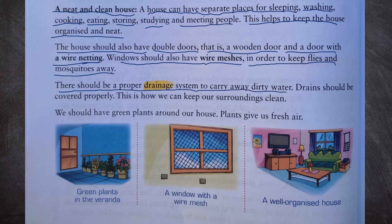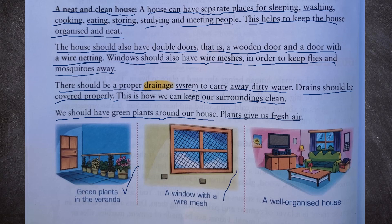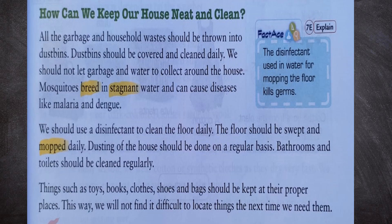There should be a proper drainage system to carry away dirty water, and drains should be covered properly. We should have green plants around our house — plants give us fresh air. We can see in this picture green plants in the veranda, a window with wire mesh, and a well-organized house.